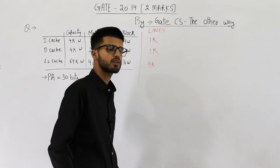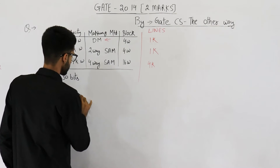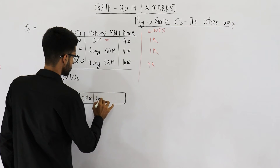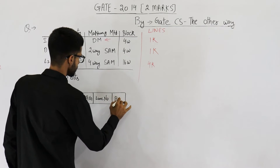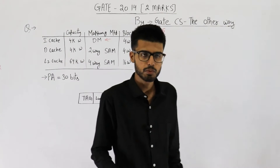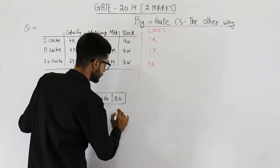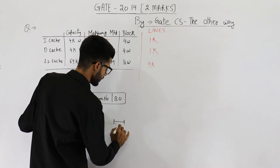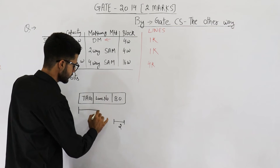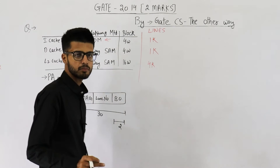In direct mapping, the physical address is split into three parts: tag, line number, and block offset. The block offset is used to identify one word from an entire block. Here there are 4 words per block, so you need 2 bits for the block offset. The physical address is 30 bits total.